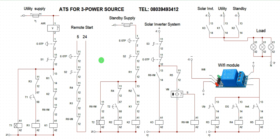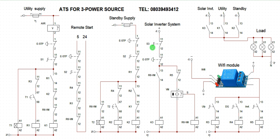Conventionally, ATS is designed according to end-user requirements. This particular logic is designed based on end-user request. The primary source of power is the solar inverter system, seconded by the utility, and lastly the standby genset. When solar is not available, utility becomes active, and in the absence of utility, the genset gets energized.